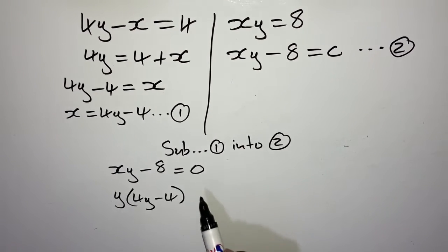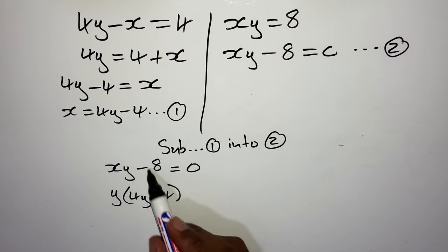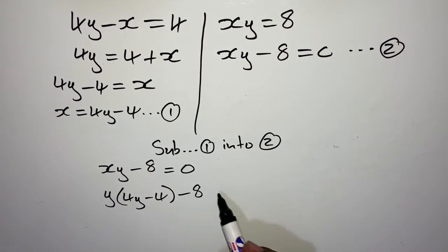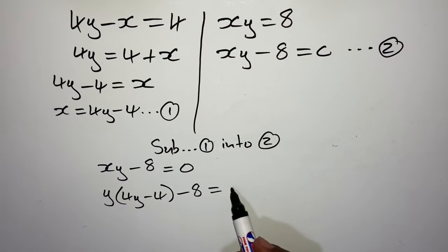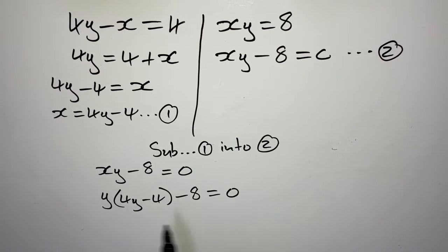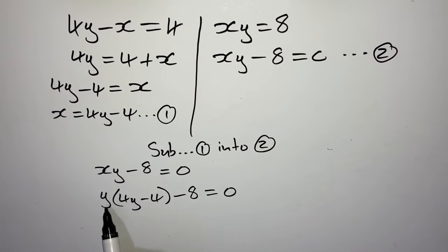We then have to go on to our next sum. We are on our third sum, still on simultaneous equations. We are given that: y plus 2 equals x, and y equals x squared minus x minus 10.